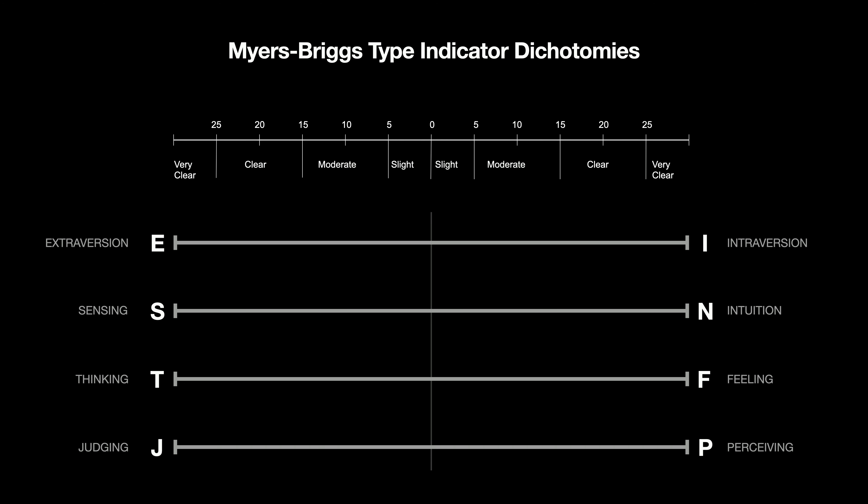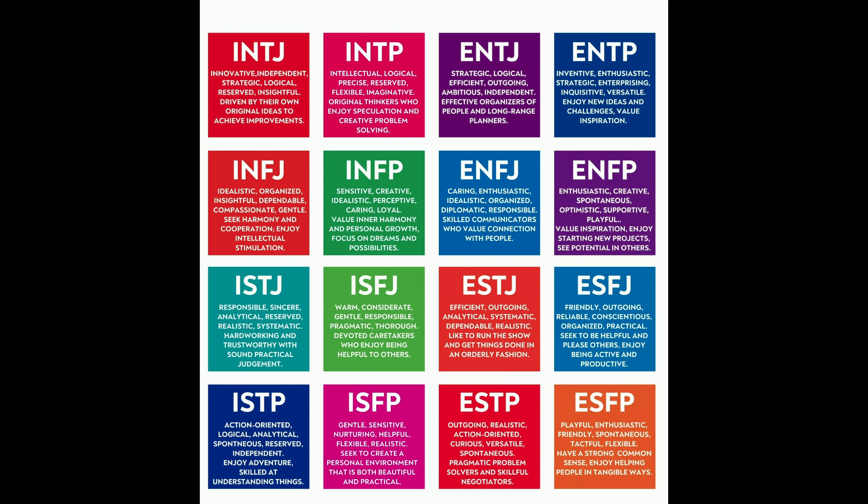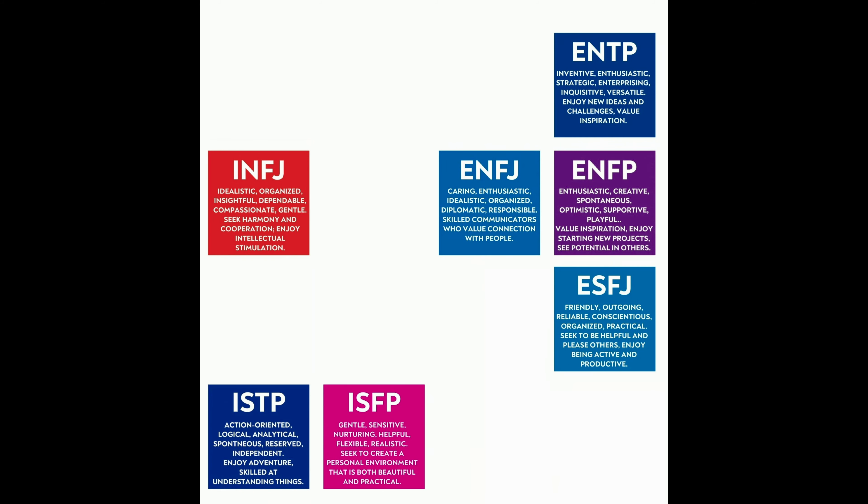Last is judging and perceiving. Judging in its extreme sees the whole world as black and white — it's either right or it's wrong, very focused on justice and things being exactly set up and executed. Perceiving is more that the world is mostly gray instead of black and white. So you're either an E or I, S or N, T or F, J or P — some combination of these four — which turns out to be the 16 personality types.